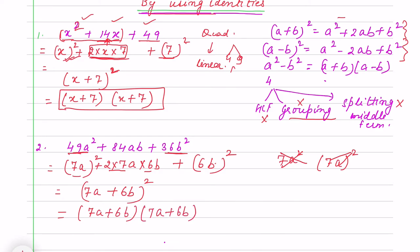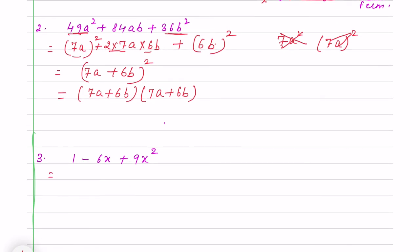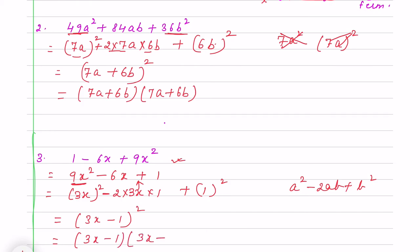Here I change it in standard form, square term first: 9x² - 6x + 1. 9x² is (3x)², plus 1². Now I verify: minus 2 × 3x × 1 = -6x. So it is a² - 2ab + b², that is (a-b)². So it is (3x-1)(3x-1).